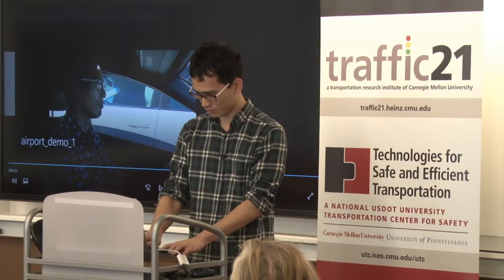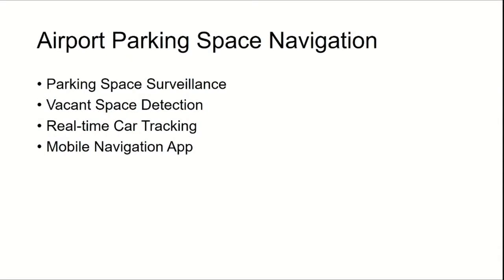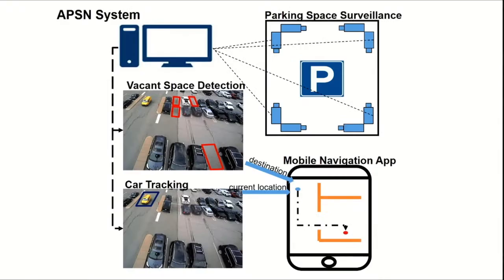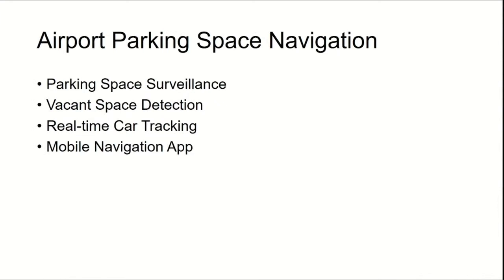Let's take a look at the whole flowchart again. We have four important functional blocks: vacant space detection and car tracking, which together give us the destination and current location of the user, and the mobile navigation app to guide our user. The parking space surveillance system provides the foundation that makes both detection and tracking possible. I will introduce each of these parts respectively.